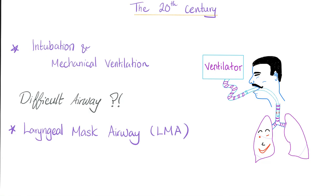In the 20th century, we developed intubation and mechanical ventilation. If the airway is difficult, we have a device called the Laryngeal Mask Airway, or LMA. But in order to intubate and mechanically ventilate, I want to relax those muscles. Also, if I'm performing abdominal surgery, I want to relax those muscles. So it's not enough to give an anesthetic — you also need to give a muscle relaxant, a neuromuscular blocker.